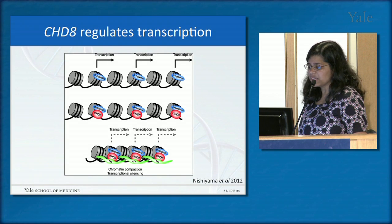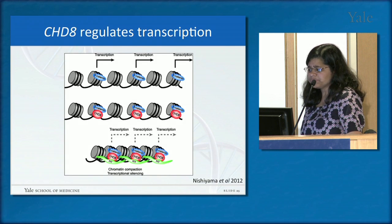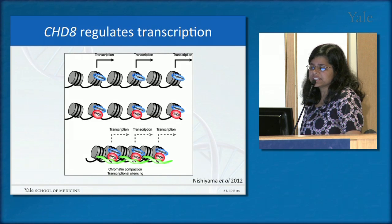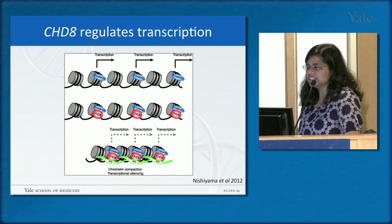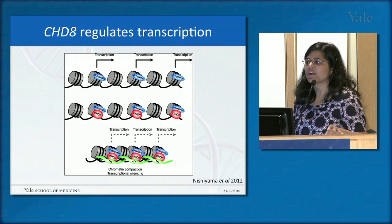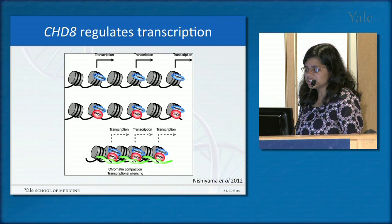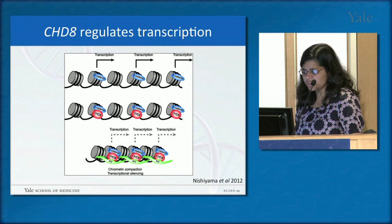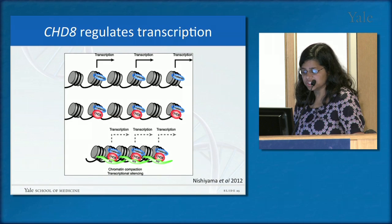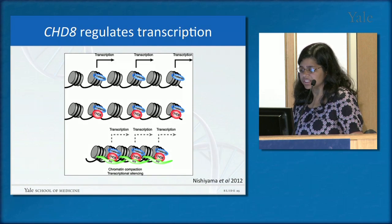One particularly interesting gene is CHD8, which has accumulated at least eight or nine de novo mutations in follow-up exome studies. CHD8 is a master regulatory gene — it regulates the transcription of other genes by binding with proteins at nucleosomes and affecting how genes are turned on and off. This helps explain how one mutation in one gene could cause something as complicated as autism: if that gene controls the expression of many other genes, a mutation in it would have very diverse downstream effects.